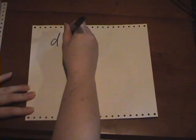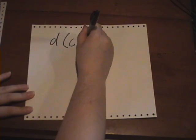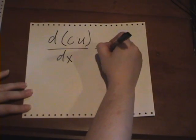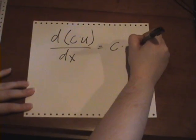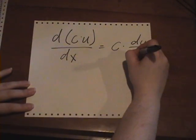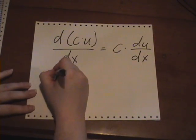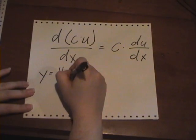We also have to remember the constant multiple rule. So the derivative of a constant times a function, and that equals the constant times the derivative of the function. So if we have y equals 4x to the fifth,